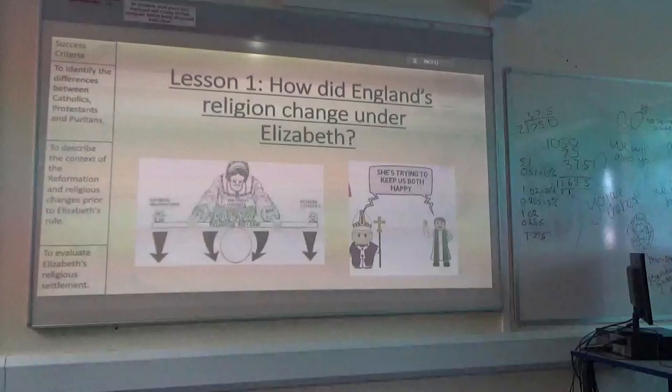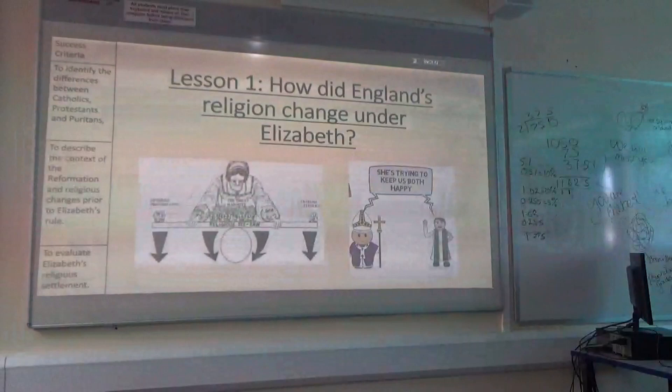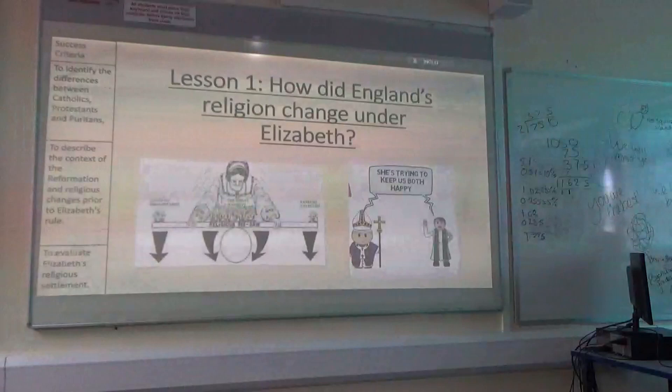We're then going to be looking at the religious context that Elizabeth took over and the problems that she had in that. And then we're going to be looking at what she does about the religion and how she tries to settle the disputes.